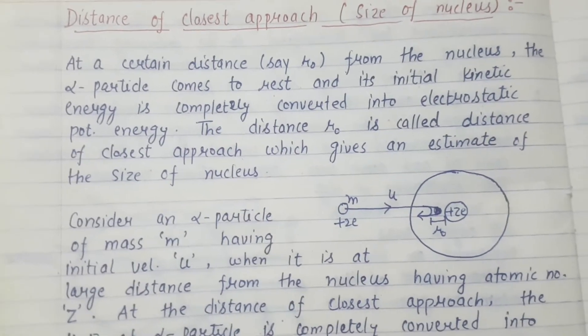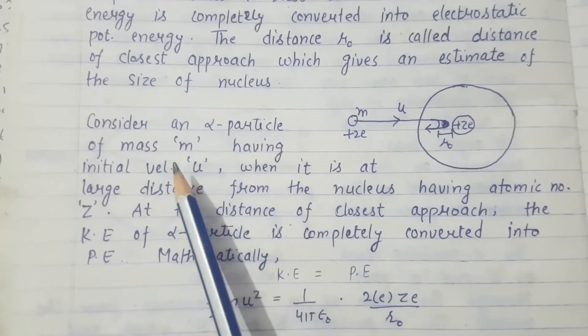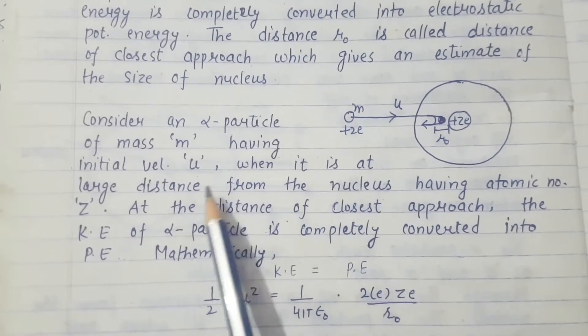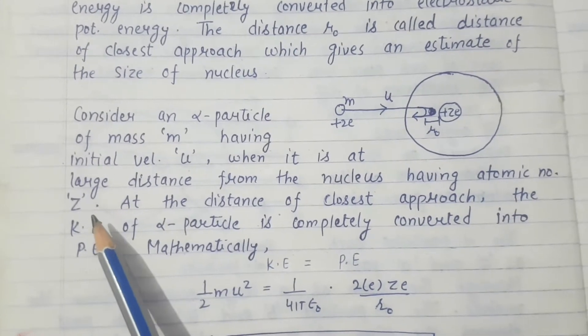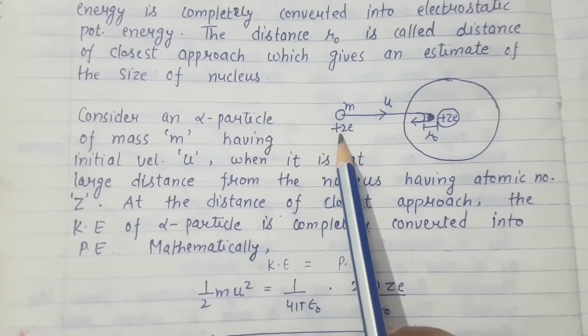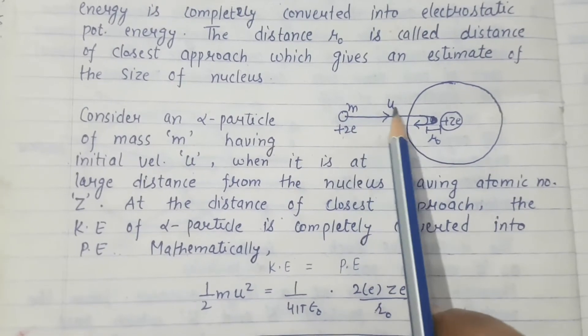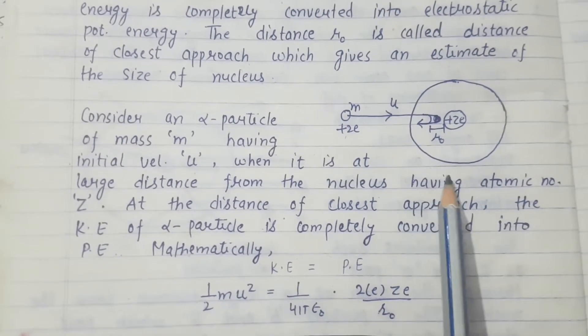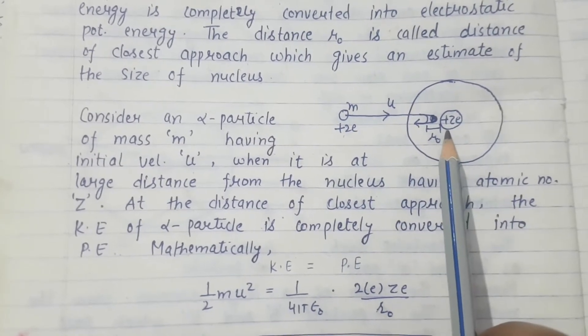For better understanding, I will explain it more. Consider an alpha particle of mass M having initial velocity U when it is at a large distance from the nucleus having atomic number Z. This is your alpha particle having charge plus 2E, and M is the mass of the alpha particle moving with initial velocity U.